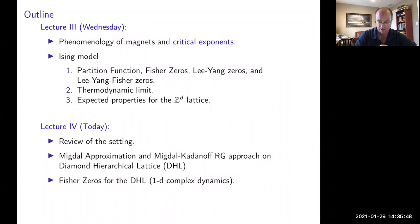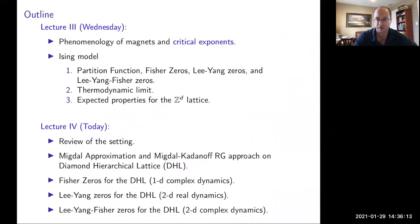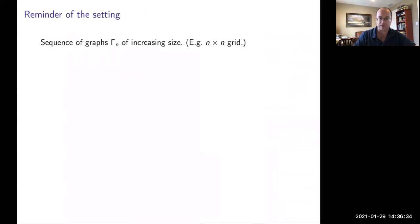I have three ambitious parts planned. First, I'll talk about the Fischer zeros for the diamond hierarchical lattice (DHL), which is one-dimensional complex dynamics. Then the Lee-Yang zeros for the DHL, which is in some sense two-dimensional real dynamics. Finally, optimistically, I'll discuss the Lee-Yang-Fischer zeros for the DHL, which involves two-dimensional complex dynamics. This is an overview of what Misha, Pavel, and I — and some others before us — have done.